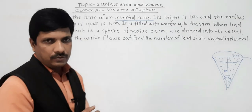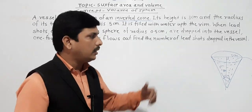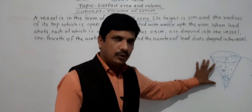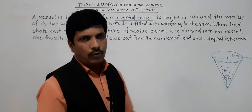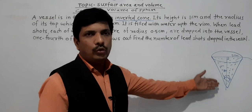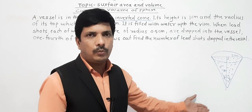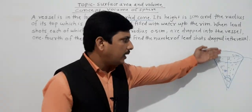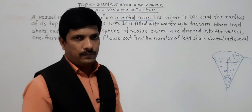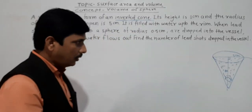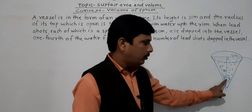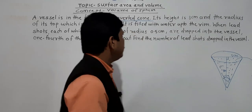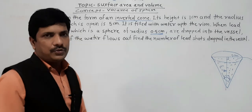First we need to decide the flow of the answer. This vessel contains water, so we need to find out the volume of this vessel. It is conical, so we can find the volume easily with the formula (1/3)πr²h. Here radius is given 5 cm and height is given 8 cm. Then we need to find the volume of a sphere, which is (4/3)πr³, and radius is given 0.5 cm.